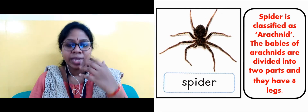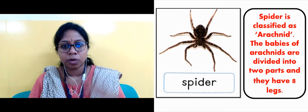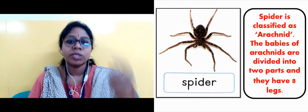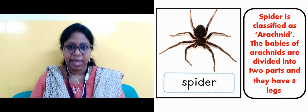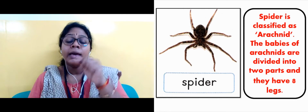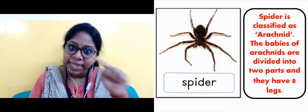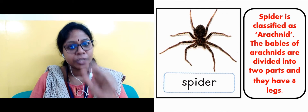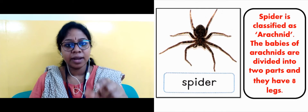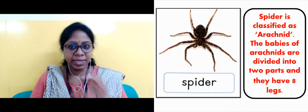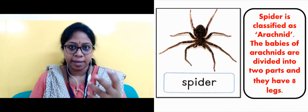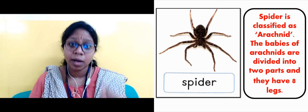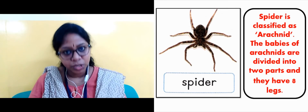Now, the insects we looked at before — like ant and cockroach — all of them have only six legs. But arachnid babies, for example spider, have eight legs. So that is the speciality of the arachnid group. The example of arachnid is spider, with eight legs.